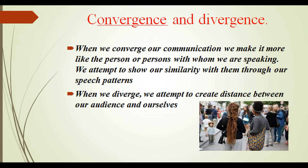In general, there are two types of accommodations: converging and divergence. When we converge our communication, we make it more like the person or persons with whom we are speaking — we attempt to show our similarity with them through our speech patterns. When we diverge, we attempt to create distance between our audience and ourselves, stressing our difference from others or our uniqueness. Using social scientific approaches as applied to communication accommodation theory, researchers may attempt to define, describe, and predict what sort of verbal and non-verbal acts can produce the desired convergent or divergent effects.